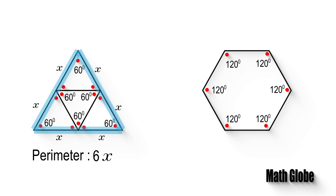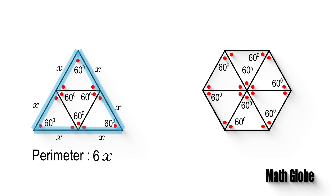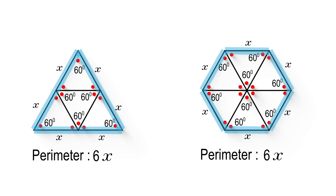Likewise, as we divide the regular hexagon into six congruent triangles, its perimeter will also be equal to 6x, as seen. The triangle and hexagon have equal perimeters.